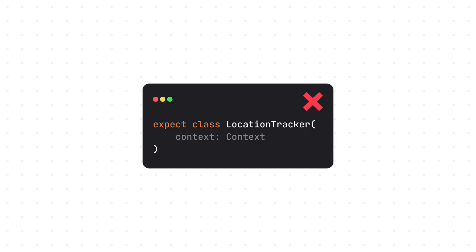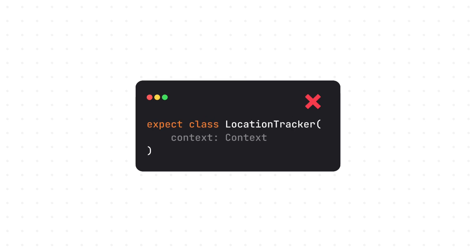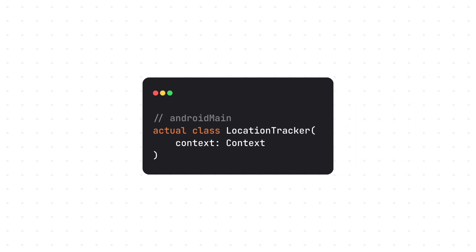There are some workarounds that you can use, but those are not quite clean solutions. In this video, I'm going to show you the most efficient and best possible way to achieve exactly that — to pass the context object inside the Android target of a KMP project using the expect and actual mechanism and the Koin dependency injection library.